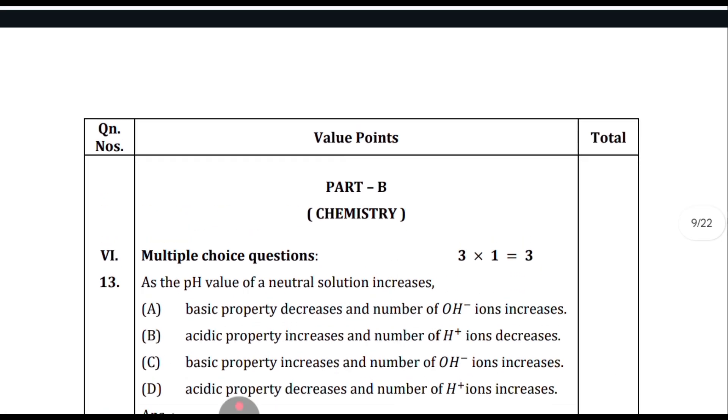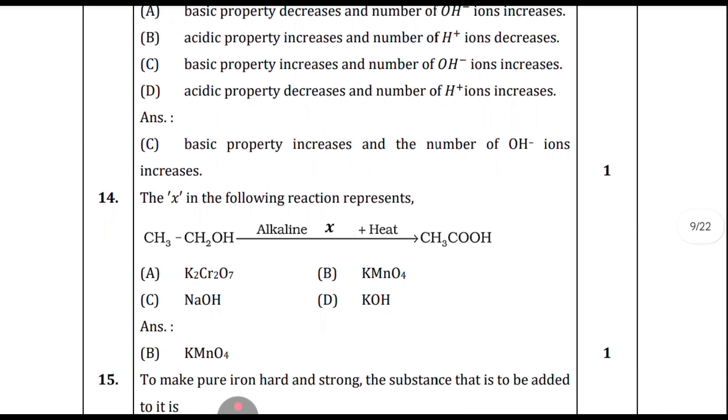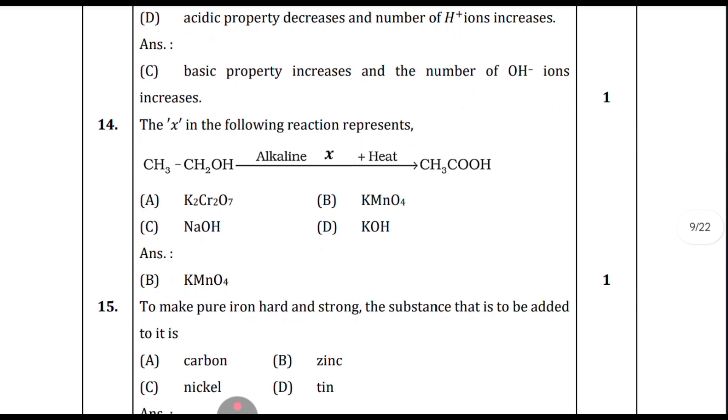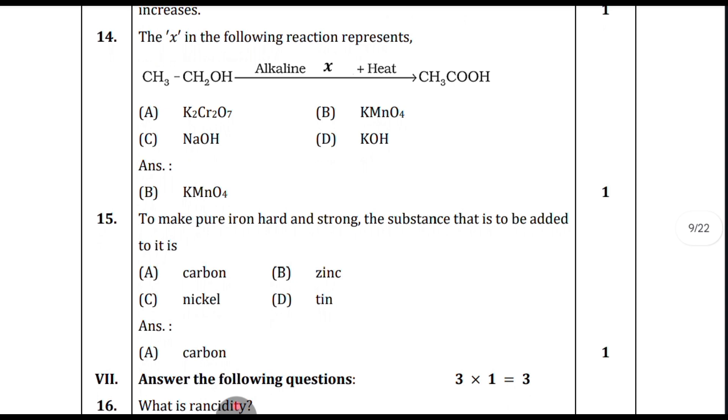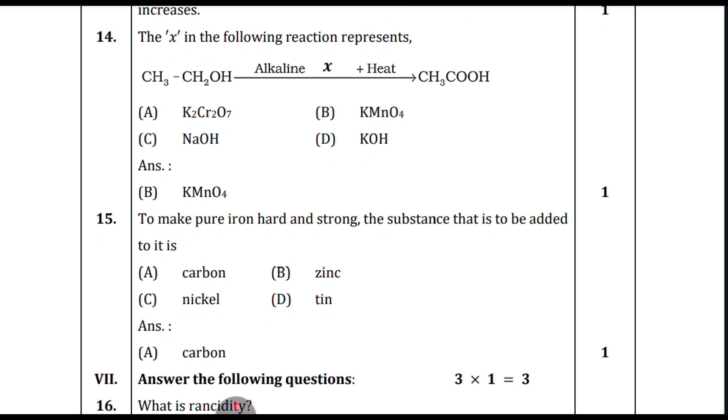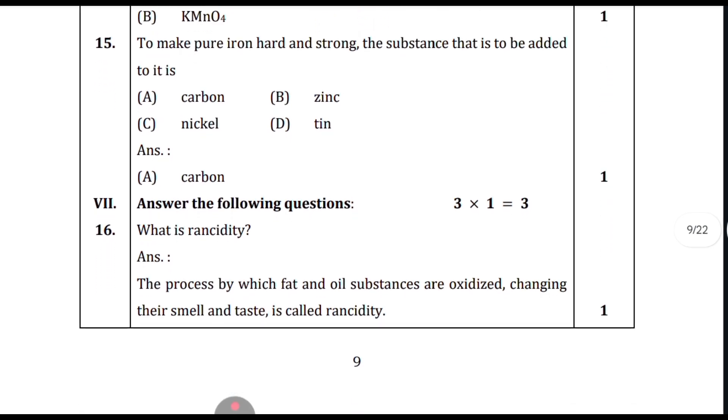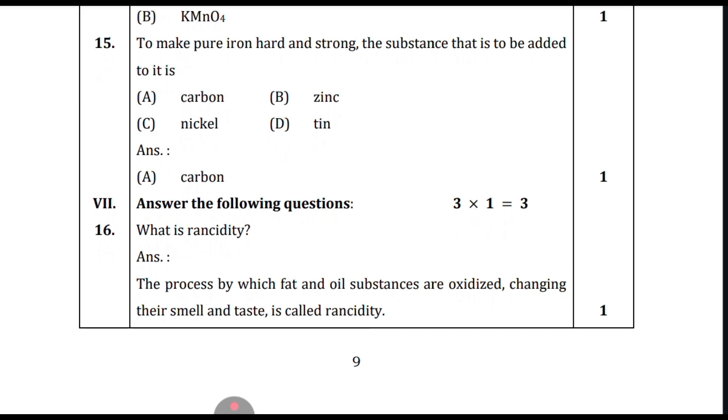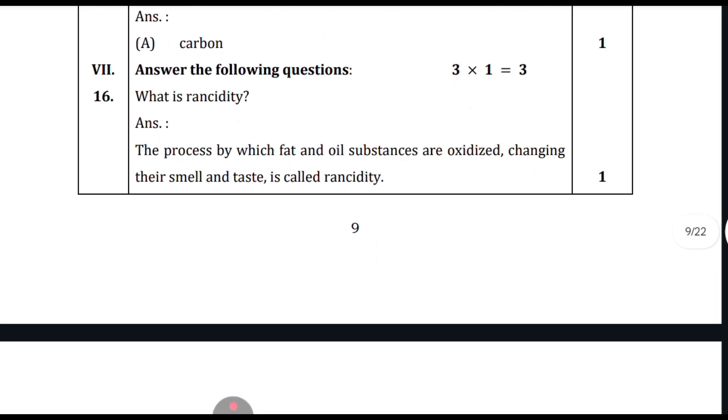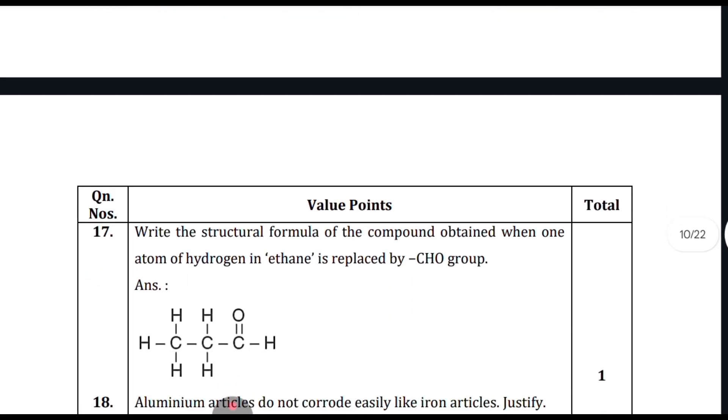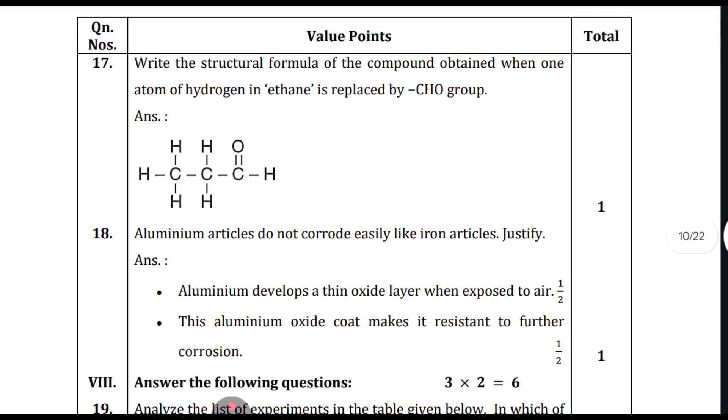This is the chemistry section. These are the MCQs. As the pH value of a neutral solution increases, basic property increases and the number of OH minus ions increases. C is the correct answer. The X in the reaction represents KMnO4, potassium permanganate. To make pure iron hard and strong, the element that is added is carbon. What is ethane? The general group formula and structure formula are very important.